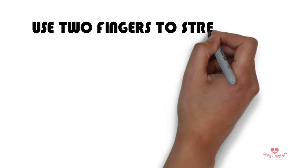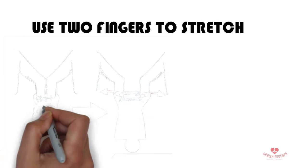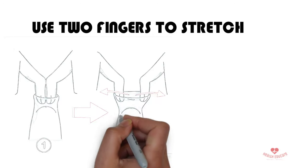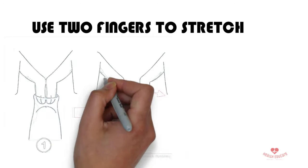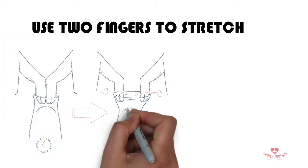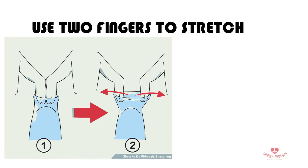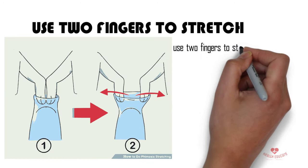Use 2 fingers to stretch. Once you can fit your fingers inside the foreskin, you are close to having your foreskin stretched an appropriate amount. To keep stretching the foreskin ring, use 2 fingers to stretch the foreskin.